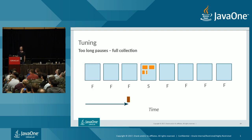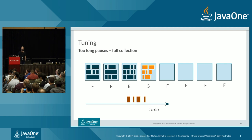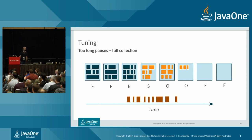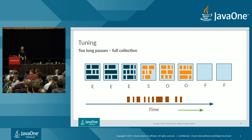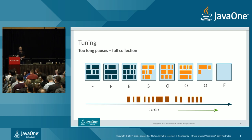Over time, young collections continue and objects surviving multiple collections get promoted to old regions. Eventually old regions start filling up — but from G1's perspective they appear full of live objects because it can't distinguish live from dead objects in old regions without concurrent marking. At that point G1 kicks off concurrent marking threads. These run concurrently while the application runs with no pause, while young collections may continue concurrently promoting more objects into old regions.